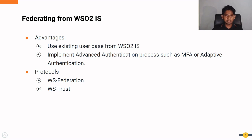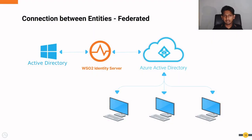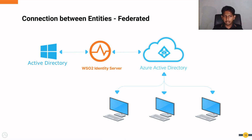The protocols used for federation are WS-Federation as well as WS-Trust for the login process. In the connection diagram with WSO2 Identity Server included, WSO2 Identity Server works as a middleman between the on-premise Active Directory and Azure Active Directory. Similar to previous scenarios, end user devices are only connected to Azure Active Directory, but when Azure Active Directory communicates with the Active Directory, the connection goes through the WSO2 Identity Server, allowing us to implement the authentication scenarios available in WSO2 Identity Server.